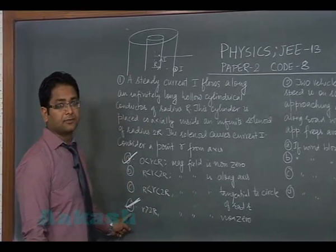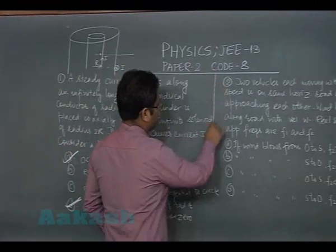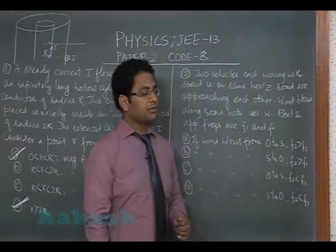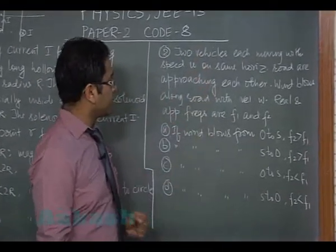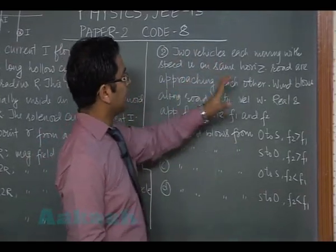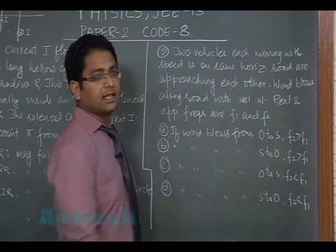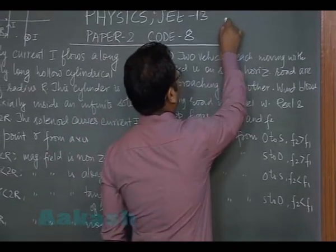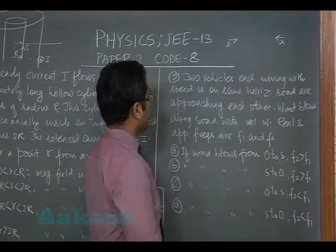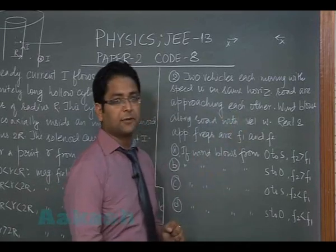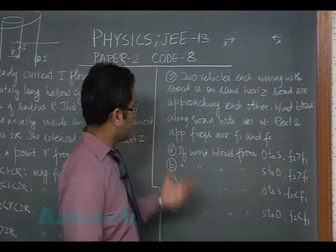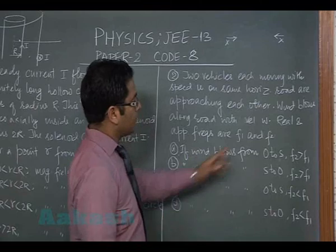Now let's go to the second question. The second question is from the chapter on mechanical waves, where Doppler's effect has been considered. Two vehicles, each moving with speed u on the same horizontal road, are approaching each other. That means if this is one vehicle, this is another vehicle, and they are approaching each other.